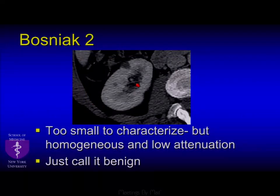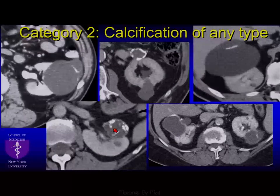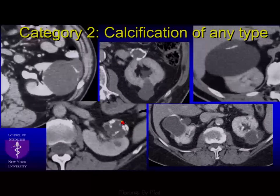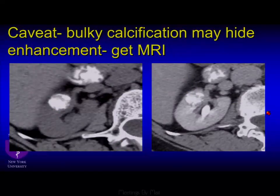Here's another example — a lesion too small to characterize. We had a case from our institution where the patient ended up getting an MRI and then a second MRI for this finding, when all they originally had was gallstones. You can now just call it benign. Calcification of any type is now considered category 2 — bulky, thin, all types. But there is a caveat: if the calcification is so bulky you can't see what's behind it, you need to ask whether it could be hiding nodular enhancement.